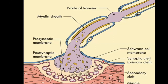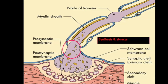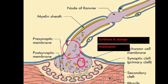Summarizing the nerve ending: synthesis and storage of acetylcholine in the axon terminal, then mobilization toward the membrane, and then release through the membrane.